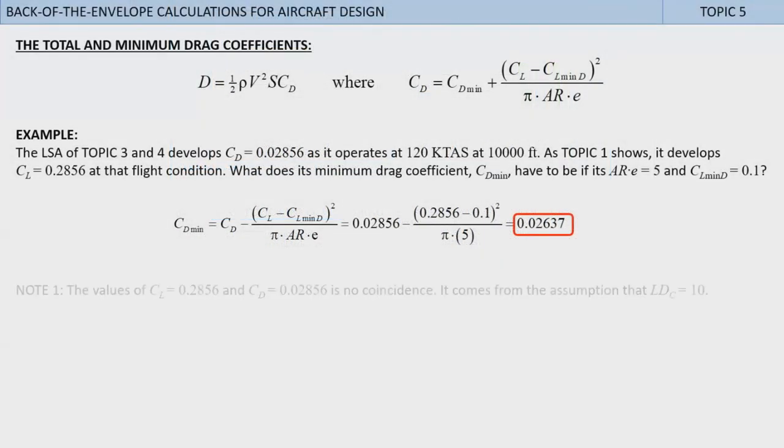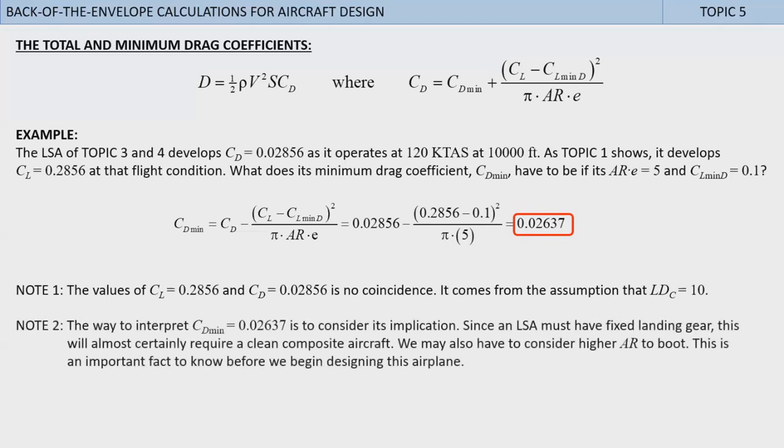Note 1: The values of CL equals 0.2856 and CD equals 0.02856 is no coincidence. It comes from the assumption that LDc equals 10. Note 2: The way to interpret CDmin equals 0.02637 is to consider its implication. Since an LSA must have fixed landing gear, this will almost certainly require a clean composite aircraft. We may also have to consider higher aspect ratio to boot. This is an important fact to know before we begin designing the airplane, because it surely will affect manufacturing and cost. Now let's go to topic 6.